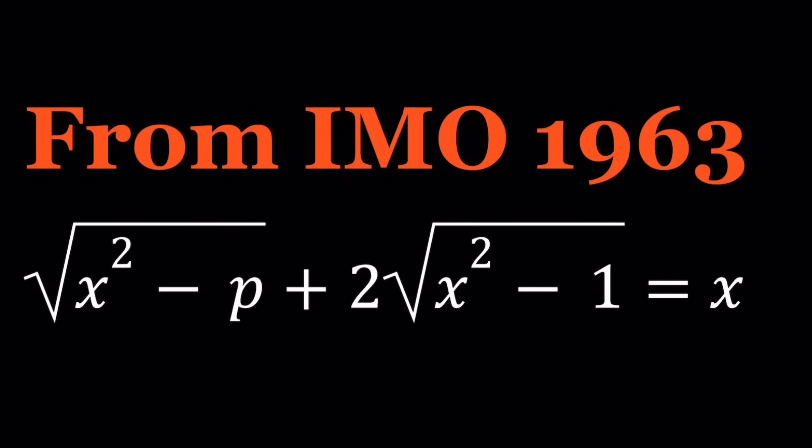Hello everyone. In this video we're going to be solving a problem from the International Math Olympiad. The IMO is a two-day, nine-hour test with six problems — it's a very difficult test. I think it started in 1959, and not very many countries were participating at first. Currently it's about more than 80 countries participating. So let's go ahead and take a look at this problem.